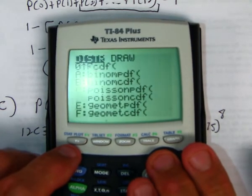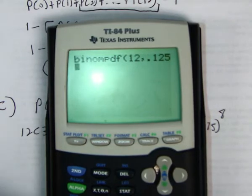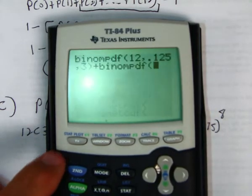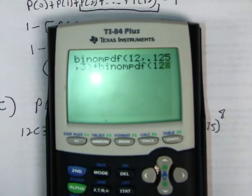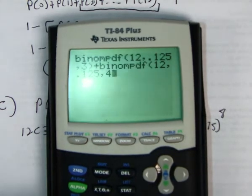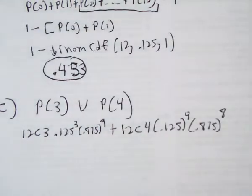So here we go. We're going to do binomPDF. Okay. We're going to do twelve, comma, 0.125, comma, three plus binomPDF, twelve, comma, 0.125, comma, four. And if I do those out, I add those two together, I get about 0.171.